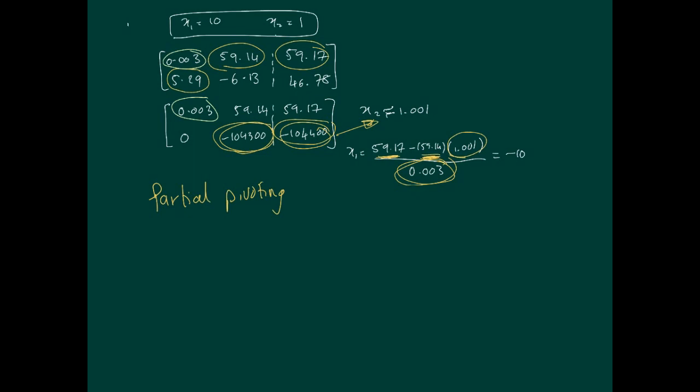Partial pivoting is very simple. Look at the pivot element - this is the location of the pivot element. You go along this column and look for the largest value in magnitude, in absolute value. The largest value here is 5.29, so you bring that to the pivot position. This means these two equations swap. If we call this equation 1 and this equation 2, then swap these two equations.